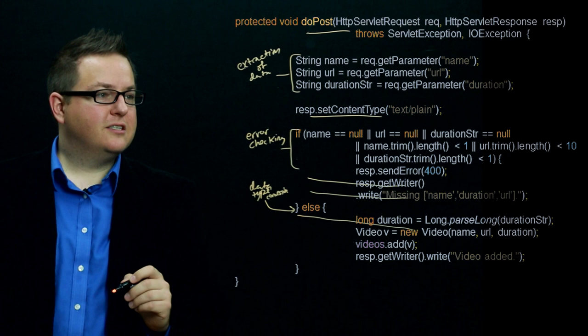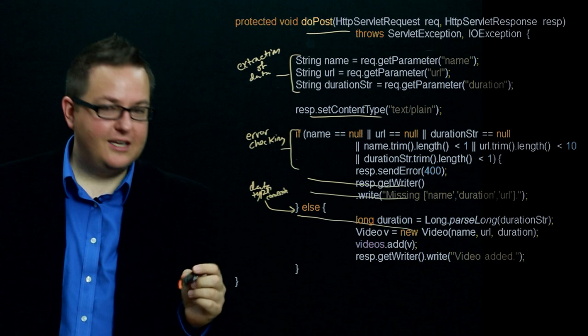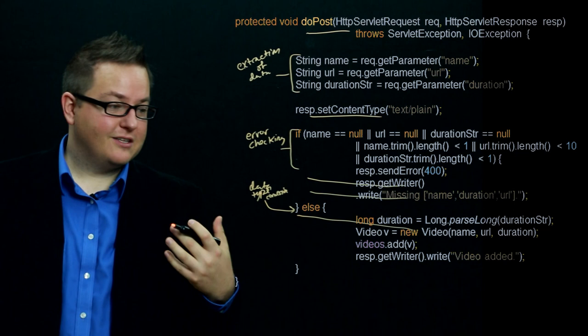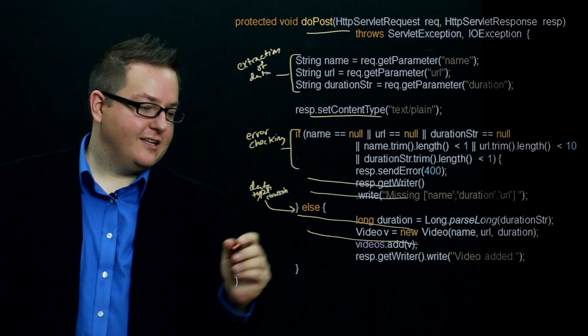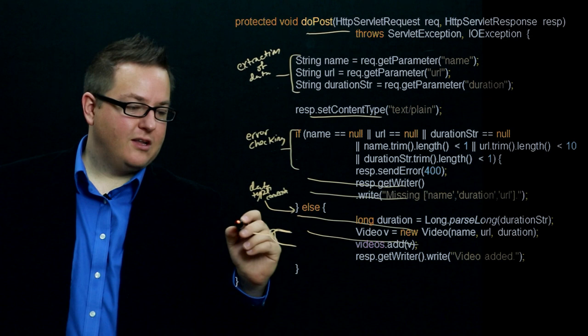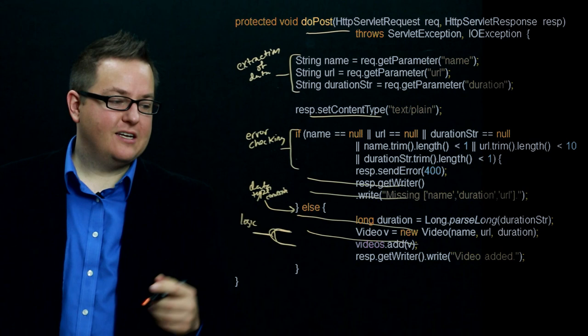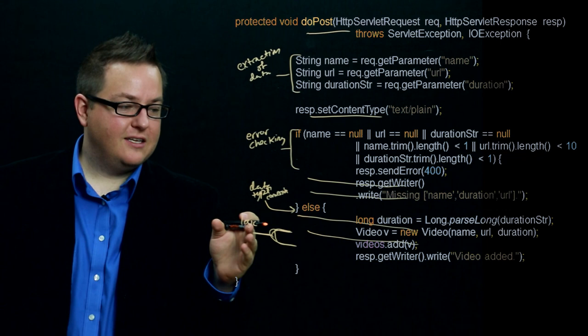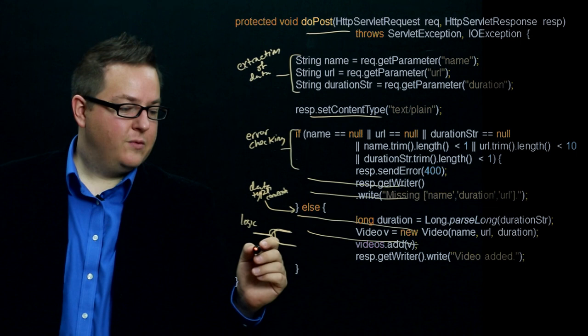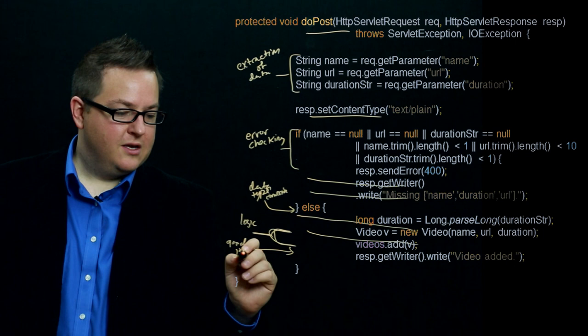Once we finally get all the data out of the request — what should be a simple process — we go and construct the video object we want to store in memory. Only at the very end do we actually do some real logic: we create and add the video to the list. So it took a whole lot of work to extract parameters, error-check them, and convert them to the correct types before we could create the object and do something with it. Finally, we tell the client that everything worked and the video was added.